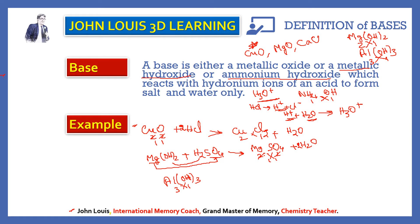One more example: aluminium hydroxide, Al(OH)₃ — aluminium valency 3, hydroxide valency 1. Al(OH)₃ reacts with nitric acid, HNO₃. Aluminium is the positive ion and nitrate is the negative ion, so we get aluminium nitrate. Aluminium valency is 3 and nitrate valency is 1, so the formula is Al(NO₃)₃. Balancing gives: Al(OH)₃ + 3HNO₃ → Al(NO₃)₃ + 3H₂O.